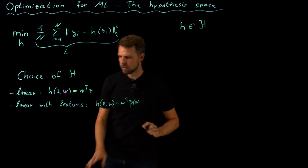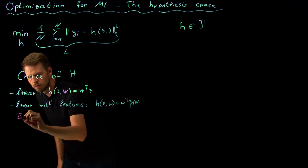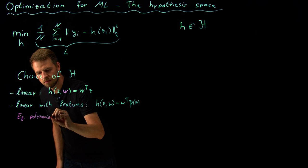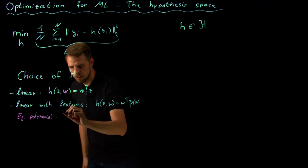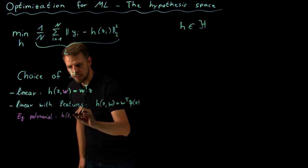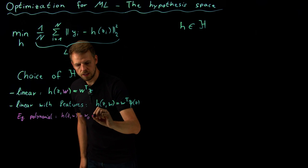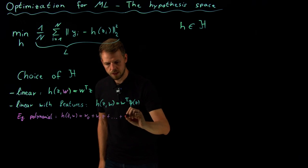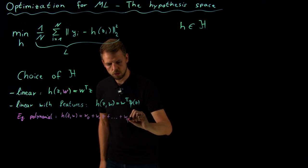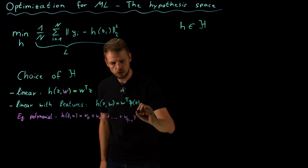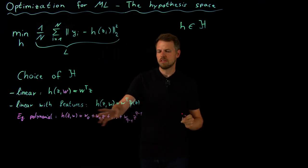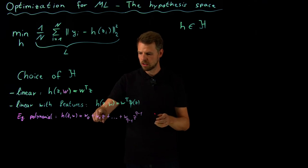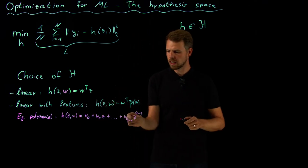So this is sort of a dictionary of functions or a feature dictionary that we can use to increase the expressivity of our model. One example might be a polynomial model. For example, this is h of z and the weights w is something like w0 plus w1 times z plus w q minus 1 times z to the power of q minus 1.